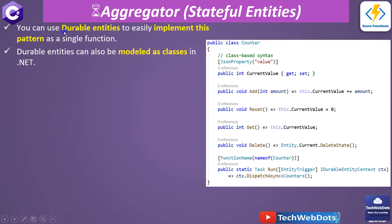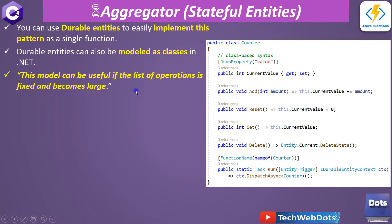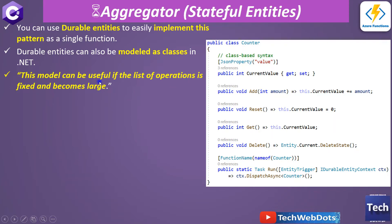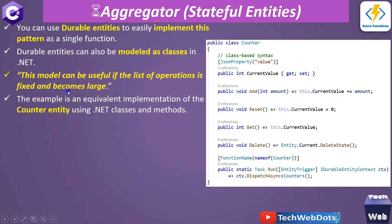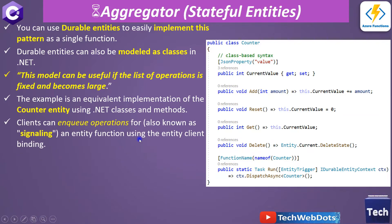You can use durable entities to easily implement this pattern as a single function. Durable entities can also be modeled as a class in .NET — there are two types: class-based and function-based. The class model can be useful if the list of operations is fixed and becomes large. This is an example of an equivalent implementation of the counter entity using .NET classes and methods.